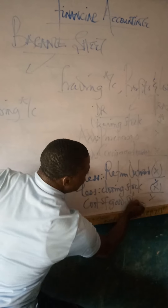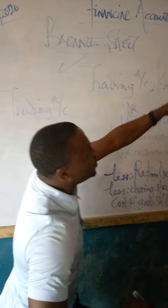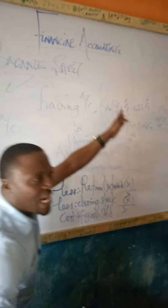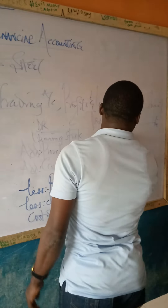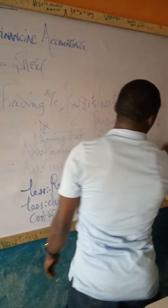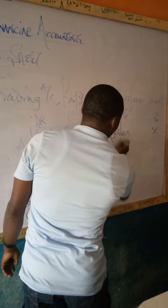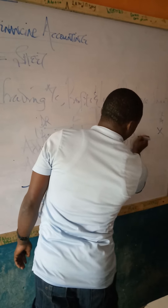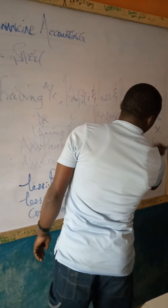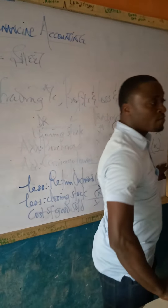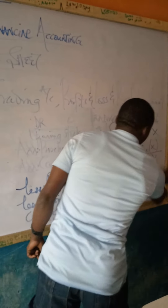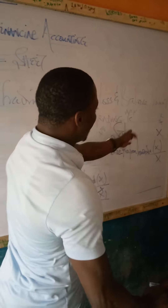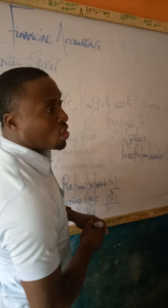So we have our cost of goods sold here. In terms of trading, how do we differentiate trading from P&L? In trading accounts, this is an account prepared to determine our gross profit or gross loss. On the credit side, we have our sales — that is the money received during the month. Then you deduct returns inward from sales, which gives us net sales. You then compare the two sides to get our gross profit or gross loss.